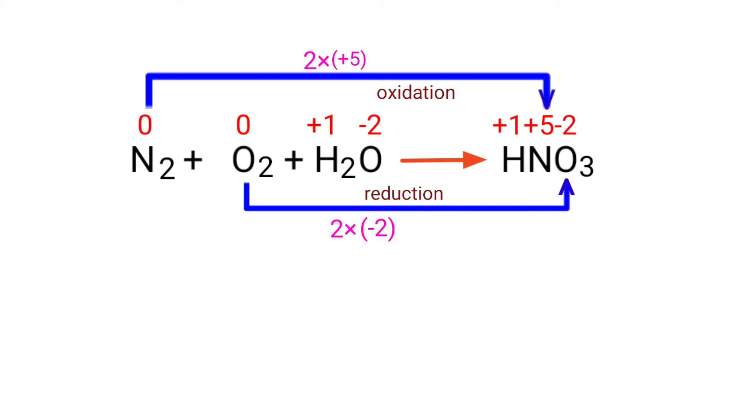Now you can make the increased oxidation number equivalent to the decreased oxidation number. To do this, multiply the increased oxidation number by a coefficient of 2 and multiply the decreased oxidation number by a coefficient of 5.